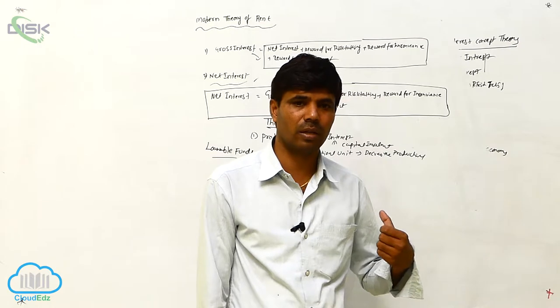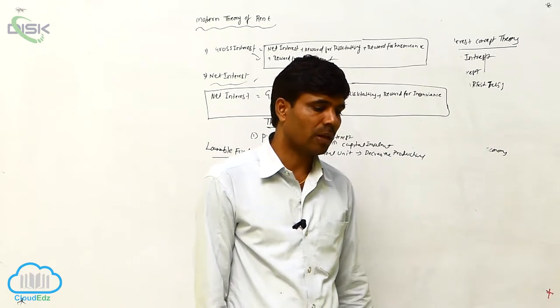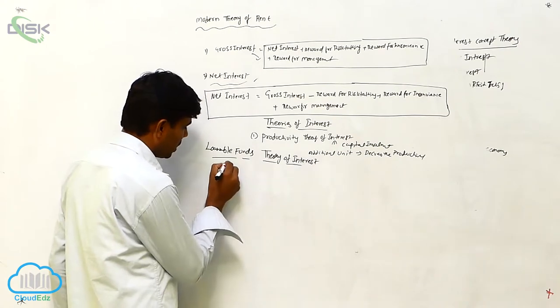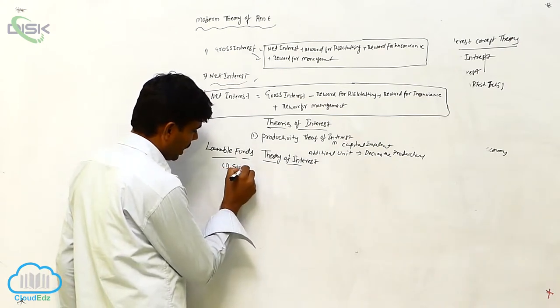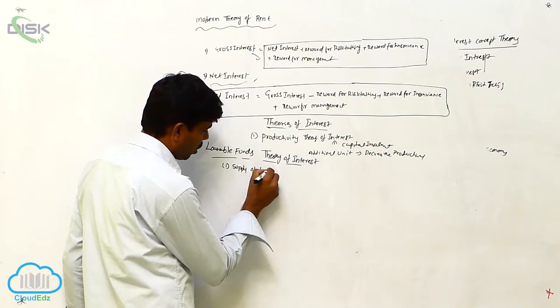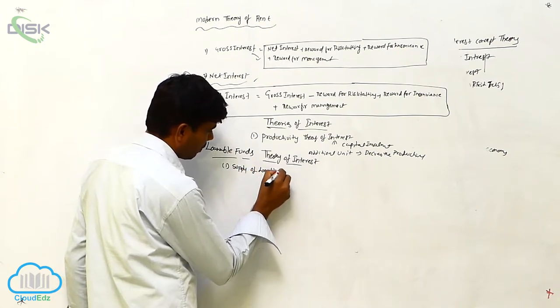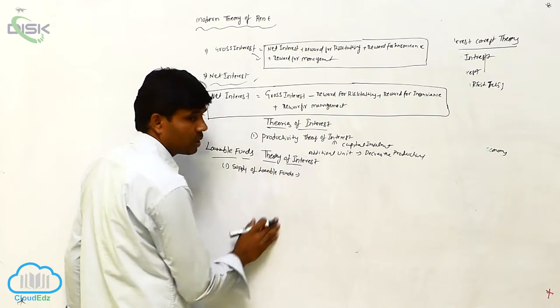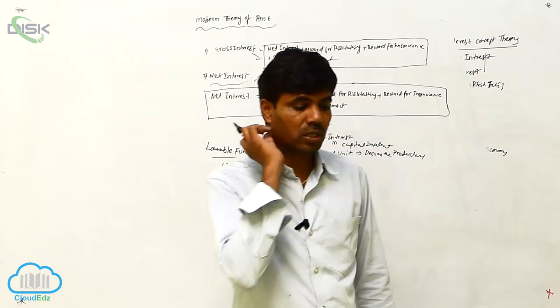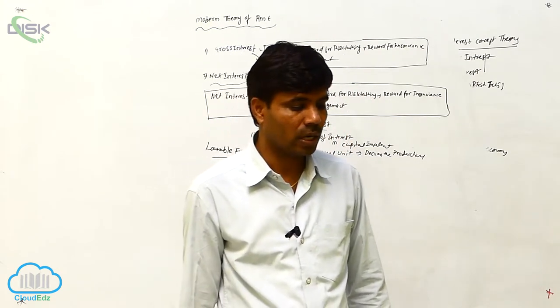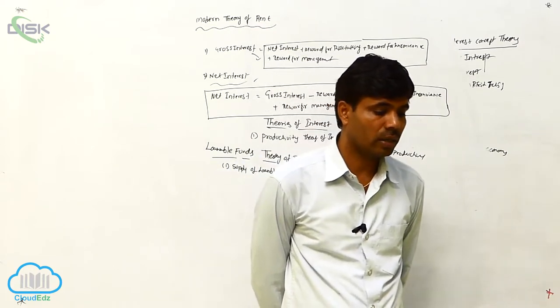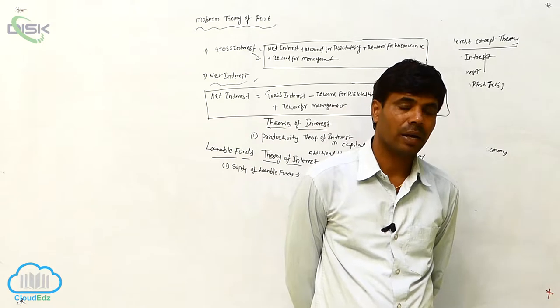So what is the reason behind that one? First is supply of loanable funds. Supply of loanable funds. What do you mean by supply of loanable funds? Loanable funds comes from the savings and dishoarding and the bank credits.